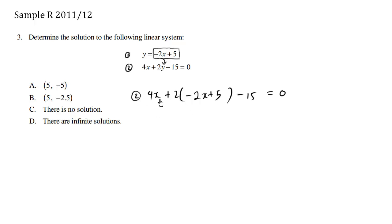We're just going to use some simple algebra. 4x using distribution, this is negative 4, this times this is negative 4x. And then we have plus 10 minus 15 equals 0.